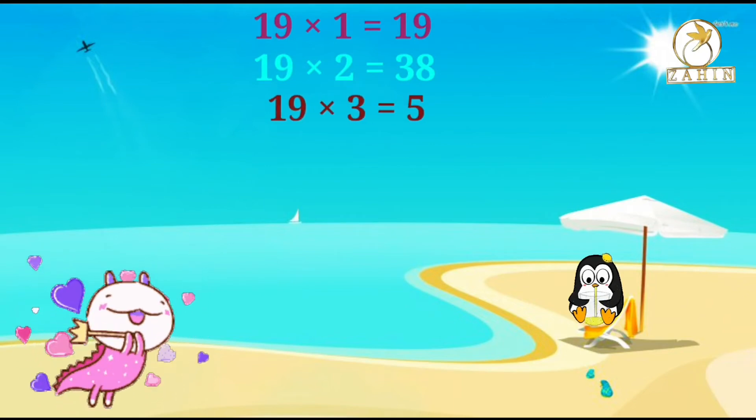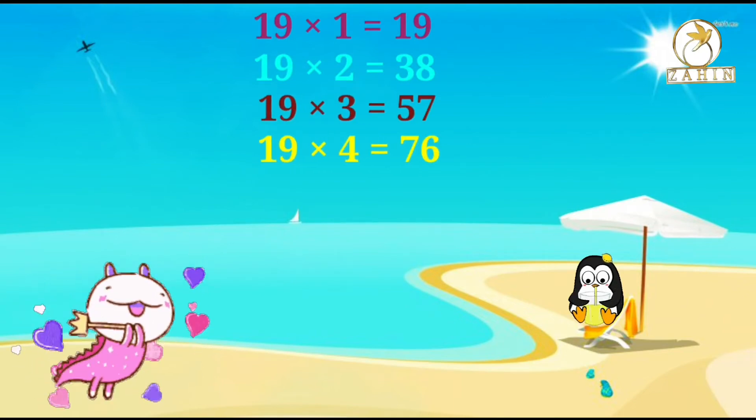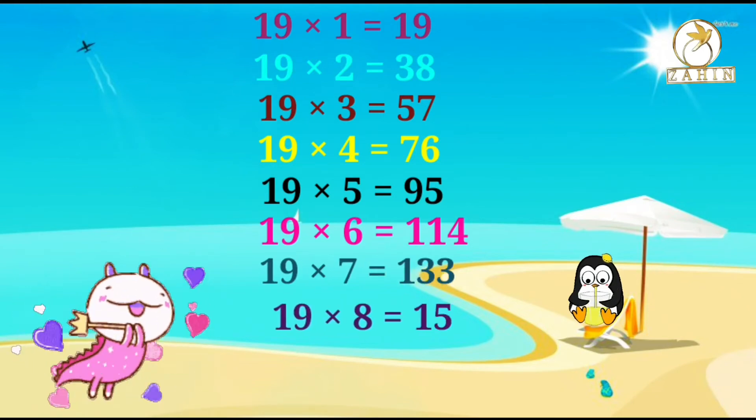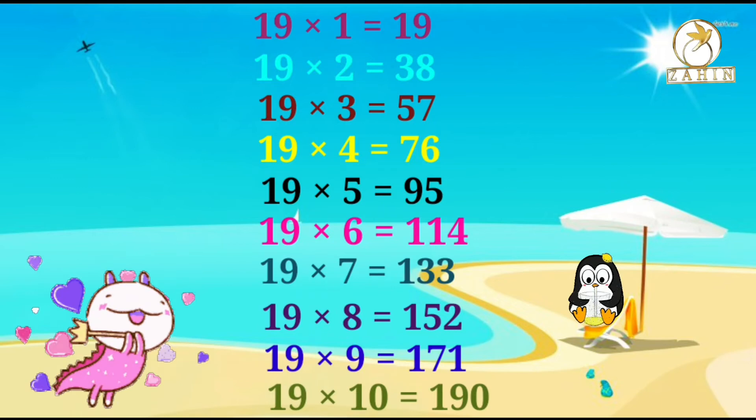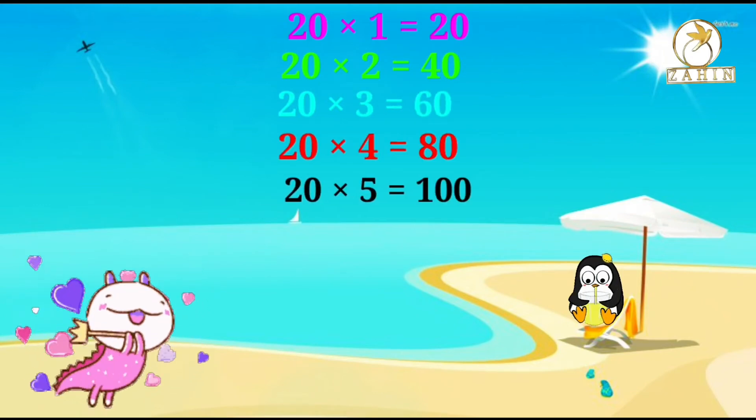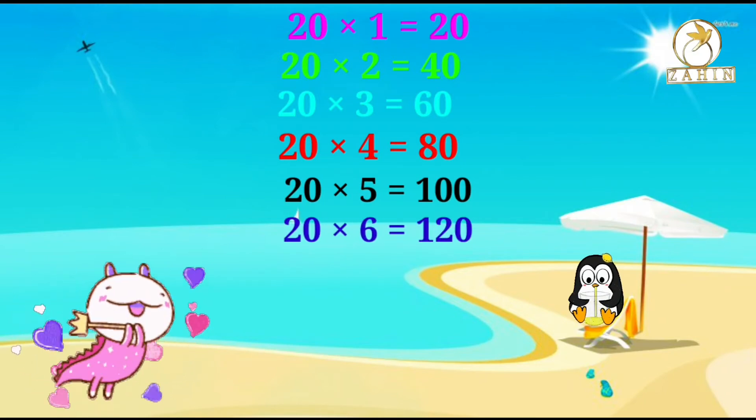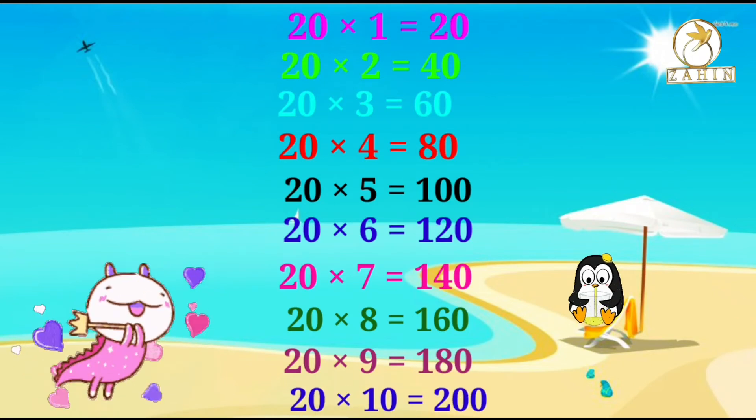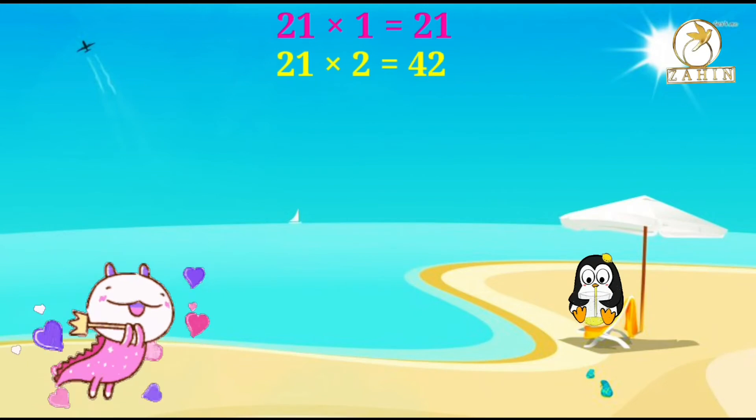19 times 2 equals 38, 19 times 3 equals 57, 19 times 4 equals 76, 19 times 5 equals 95, 19 times 6 equals 114, 19 times 7 equals 133, 19 times 8 equals 152, 19 times 9 equals 171, 19 times 10 equals 190. 2 twenties equals 40, 3 twenties equals 60, 4 twenties equals 80, 5 twenties equals 100, 6 twenties equals 120, 7 twenties equals 140, 8 twenties equals 160, 9 twenties equals 180, 20 times 10 equals 200. 21 times 1 equals 21, 21 times 2 equals 42.